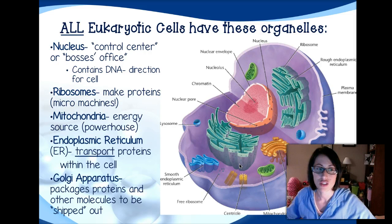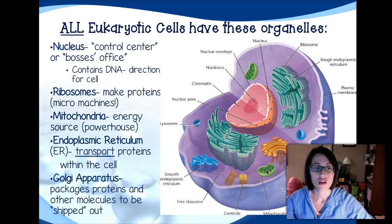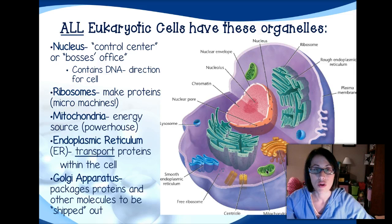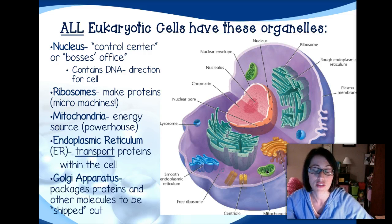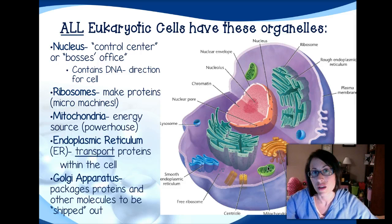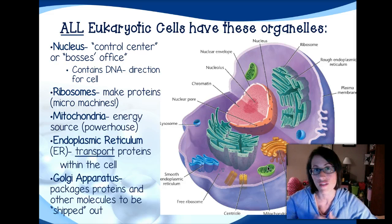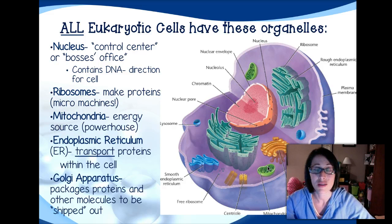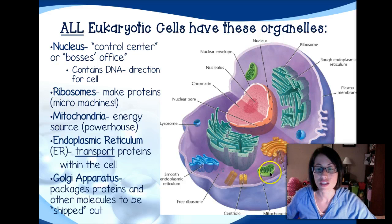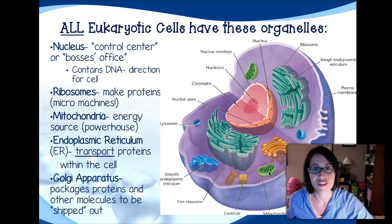The next one is the mitochondria. This is our energy source for the cell. We have to eat certain things to give our body energy — we talked about one of those things being carbohydrates. So the mitochondria is responsible for breaking down those carbohydrates and giving our cells energy for everything they do. Cells that have a much higher energy requirement, like muscle cells, are going to have a lot more mitochondria than cells that don't need as much energy, like skin cells.